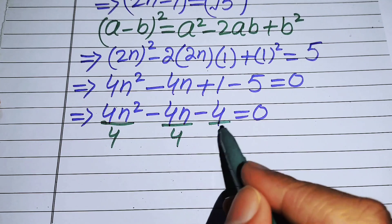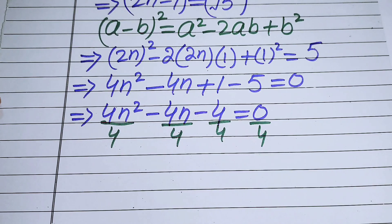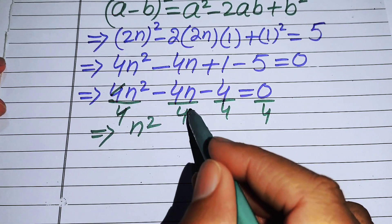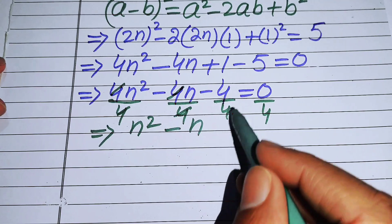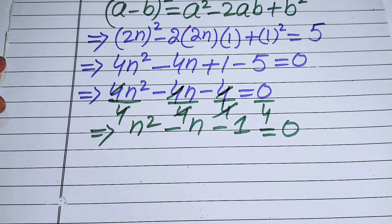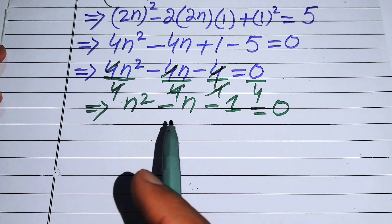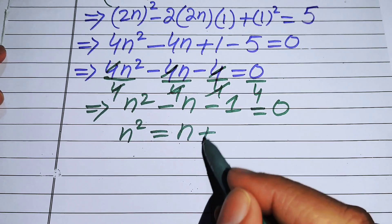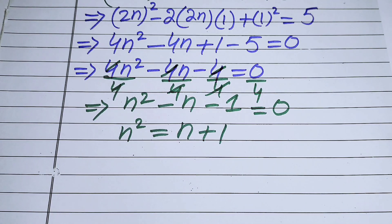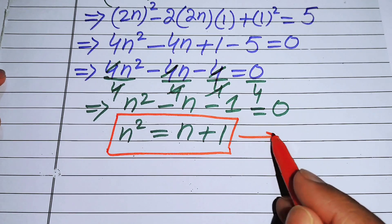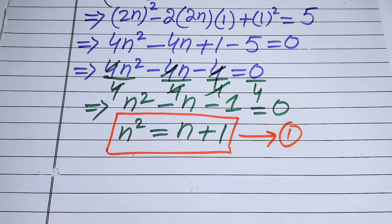We divide both sides by 4, since 4 is the common factor. This gives n² - n - 1 = 0. Moving terms to the right-hand side, we obtain n² = n + 1. We label this as Equation 1.